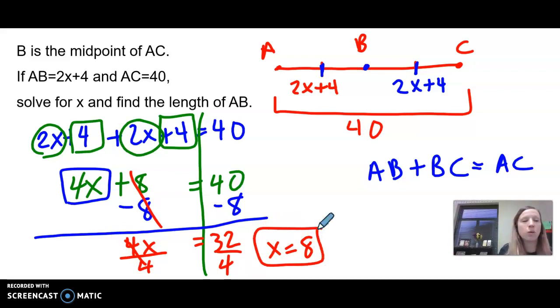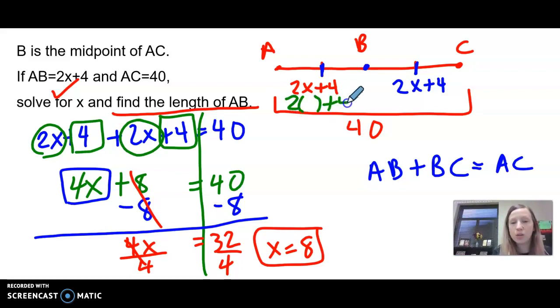Now keep in mind, that's only half of what we're supposed to do. Now we need to find the length of AB. So AB is 2x plus 4. So we know that x is 8. So we're going to replace the x with 8. So 2 times 8 is 16. 16 plus 4 is 20. So the length of AB is 20 units.